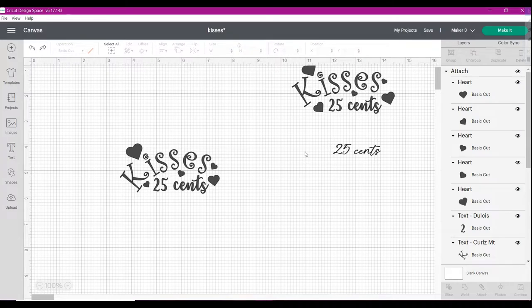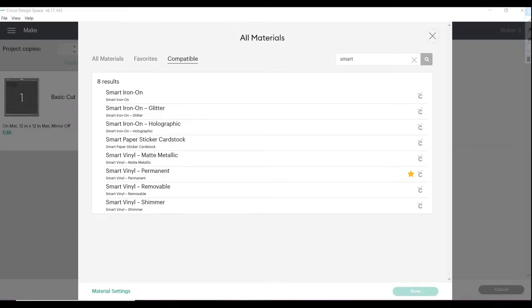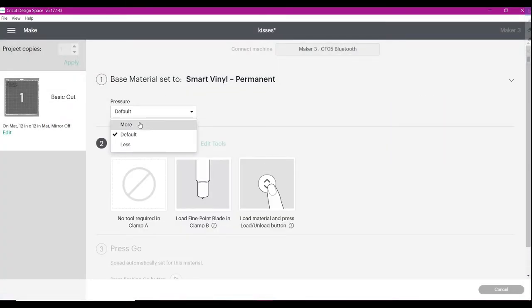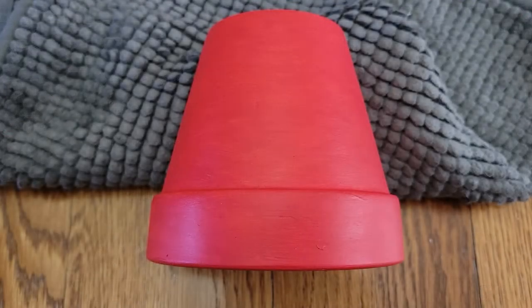I'm printing this on permanent vinyl and so we will select that when we cut. So I'm going to be using some vinyl permanent. And then I always like to put more pressure. And then we will make it.